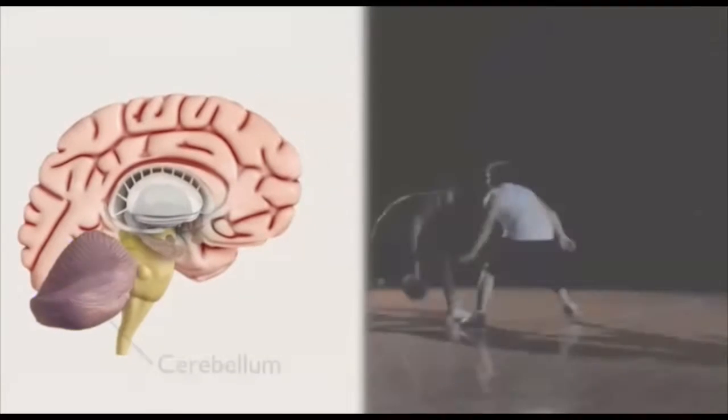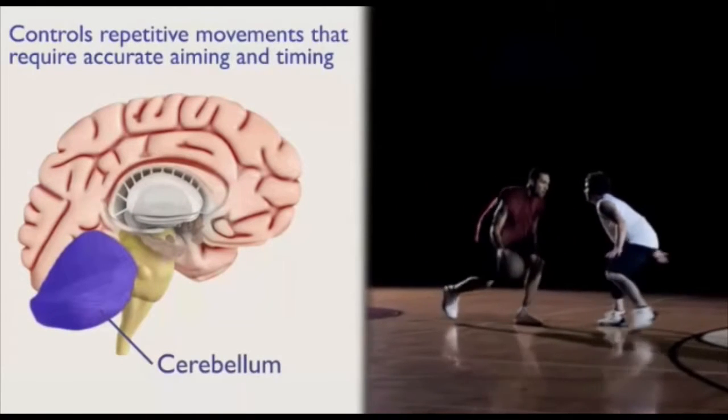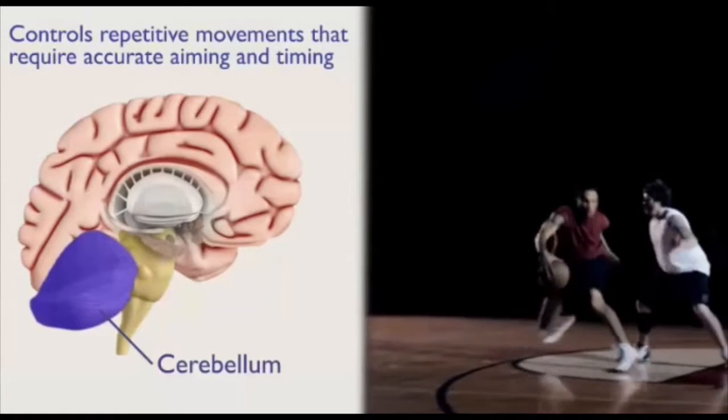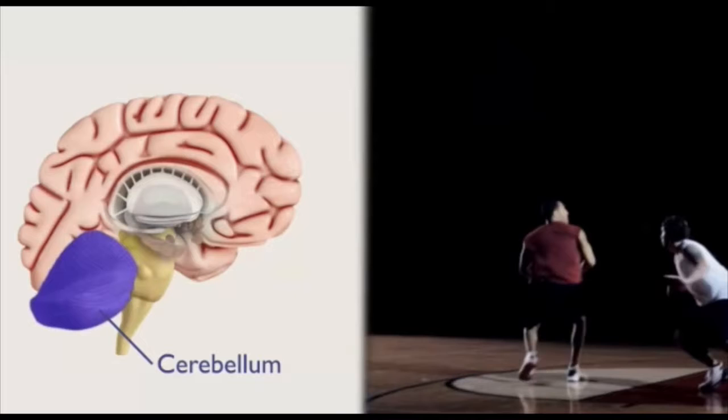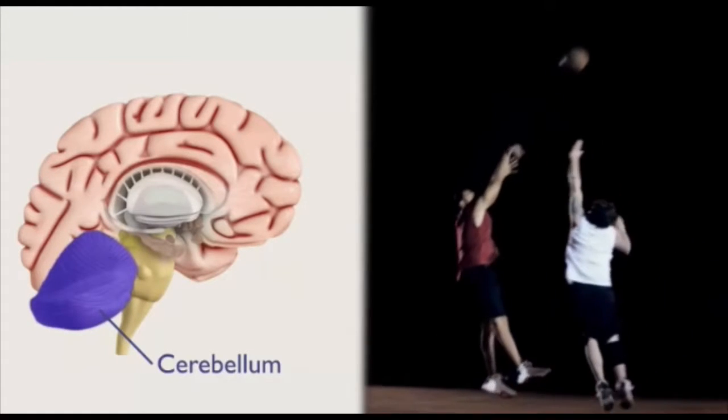The cerebellum controls repetitive movements that require accurate aiming and timing, which are essential for passing the ball and running up and down the court. People with cerebellar damage lose coordination and often appear clumsy, bumping into things and tripping. The cerebellum helps to smoothly guide our movements toward targets.